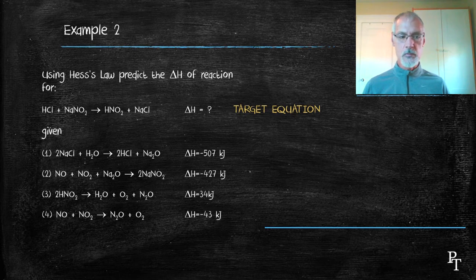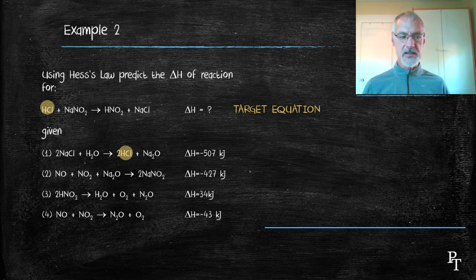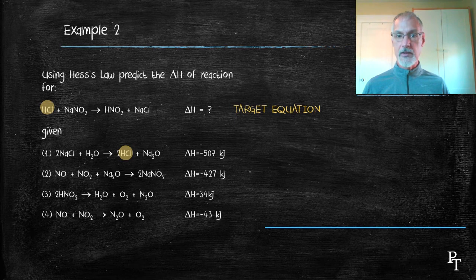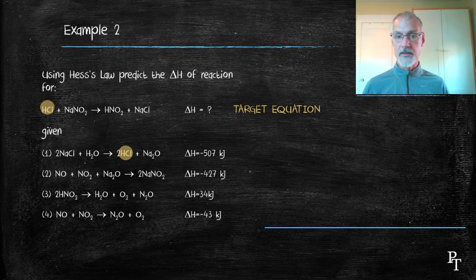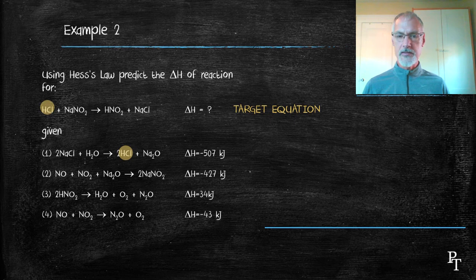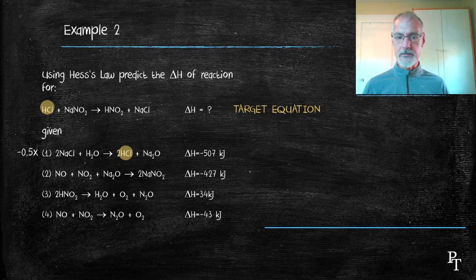So I'll work with the HCl. The first thing I notice is that my given equation, the HCl is on the wrong side. So I'm going to have to multiply this by negative one. And the next thing I notice is the coefficient of two in front of HCl. So I'm going to have to multiply it by negative a half. Also the heat term. So here's the new equation.